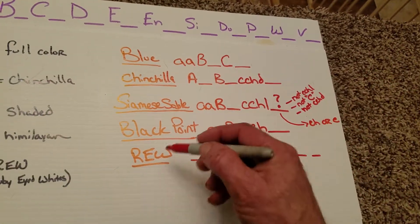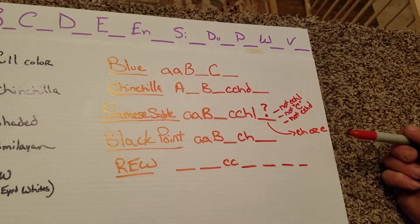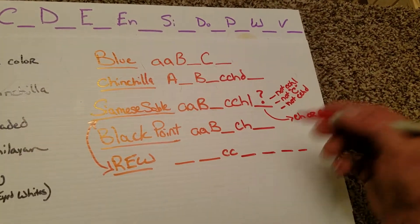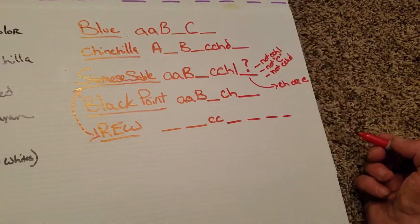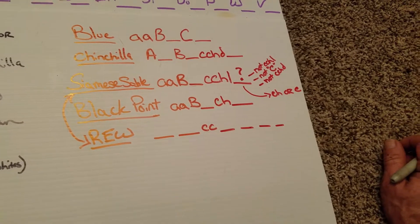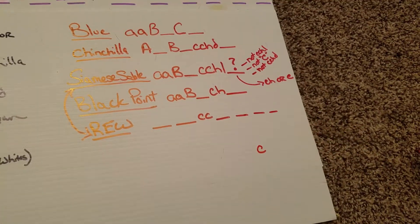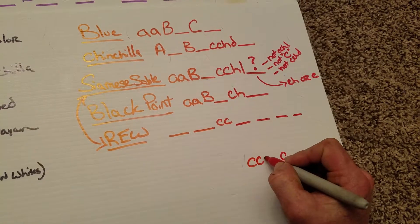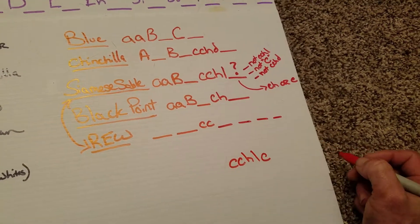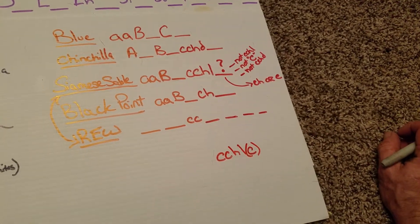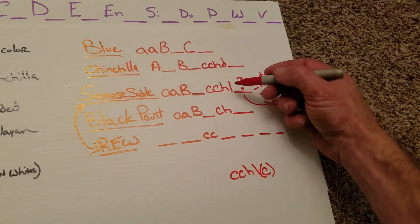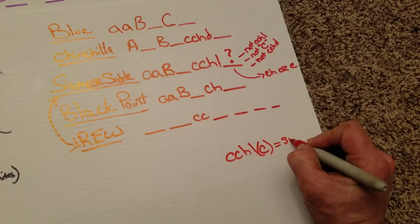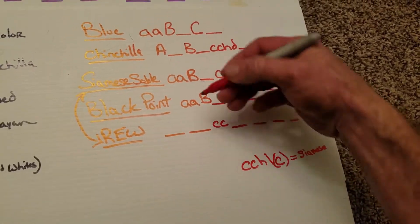So what we can do is if we have a ruby-eyed white in our Holland lop that is a Siamese sable, we could technically breed these two together. And we know that based off of this information, the only thing that our ruby-eyed white can contribute is a lowercase c, and we know that that Siamese sable is going to carry itself over. I'm going to put that in parentheses. So let's say that these two alleles that we know happen, we're going to get more than likely whatever we bred our ruby-eyed white to, we're going to see we're going to get Siamese sable.